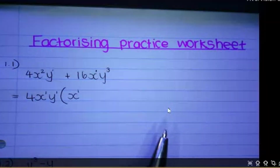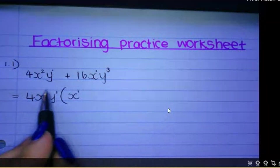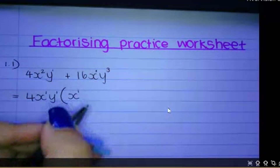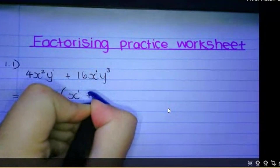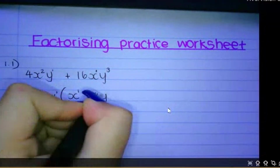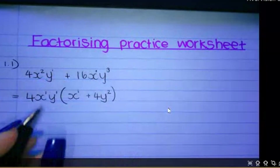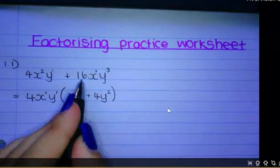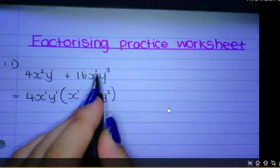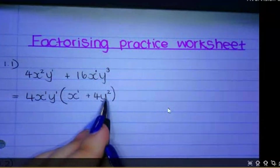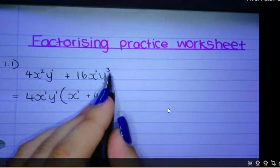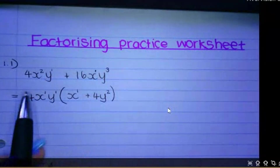Next: what must I multiply this highest common factor by to get the second term? The answer is 4y squared — because 4 times 4 is 16, then x to the power of 1, there's x to the power of 1, and y to the power of 1 times y to the power of 2 — remember, you add the exponents and it gives you y to the power of 3. So that is your answer.